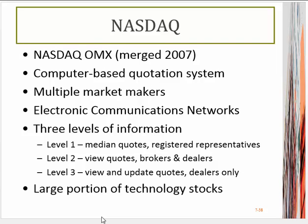The NASDAQ is the other very large marketplace — it's a computer-based quotation system. Historically this has featured really small companies; however, there are now some large companies on NASDAQ as well. There are a couple of different levels of information, so depending on what a brokerage house is willing to pay for, they can give you certain kinds of information about the stock. NASDAQ was also historically referred to as the over-the-counter market, or OTC. It says here most are technology stocks, but that's not necessarily so — though it does seem to be trending in that direction.